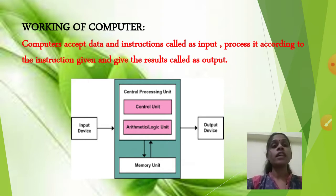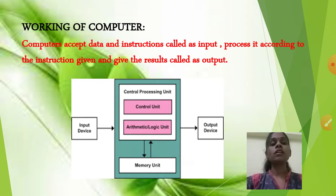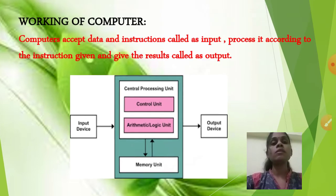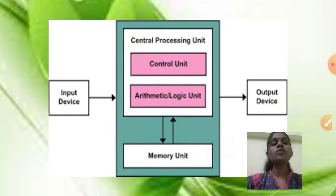After processing goes on inside the CPU — the full form of CPU is Central Processing Unit. After processing, the input is processed and that processed result goes to the output devices. The Central Processing Unit consists of the Control Unit, Arithmetic and Logical Unit, and Memory Unit.